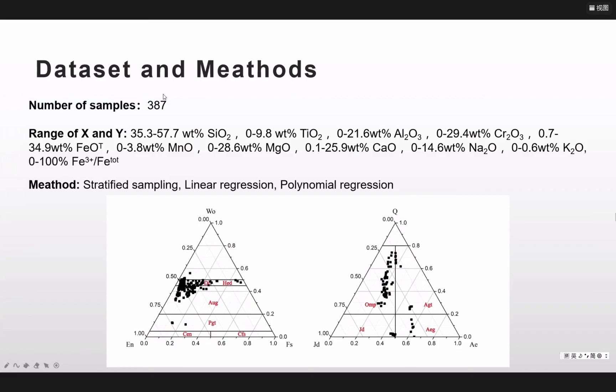At first, let's talk about the dataset and the method. First, we collect 387 samples and they cover a wide range of the composition. We can see from these two pictures, we almost collect the sample from almost all the kinds of the CPX.